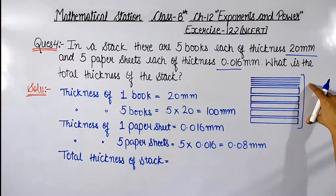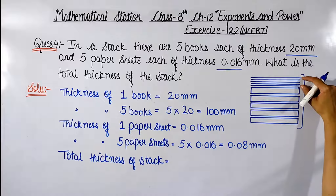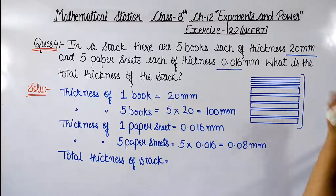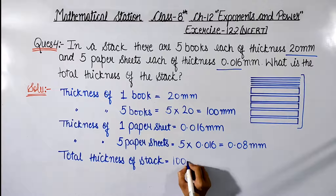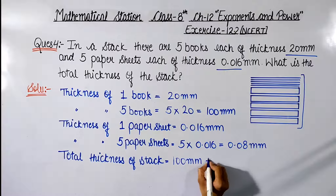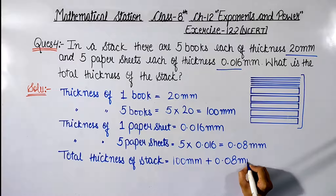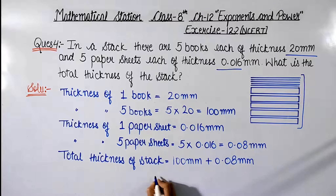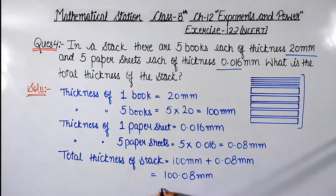What will be the total thickness of this bundle? We will add the total thickness of 5 books and the total thickness of 5 paper sheets. So the total thickness of the stack is 100 mm plus 0.08 mm, which is equal to 100.08 mm.